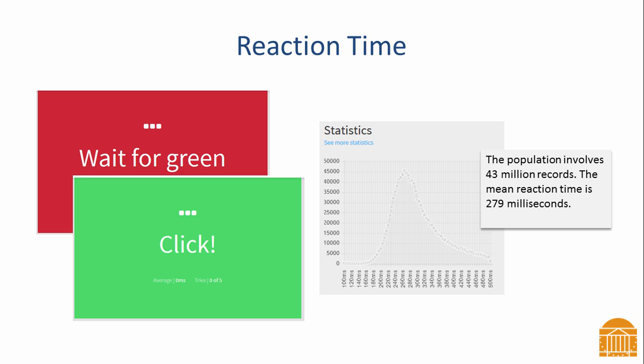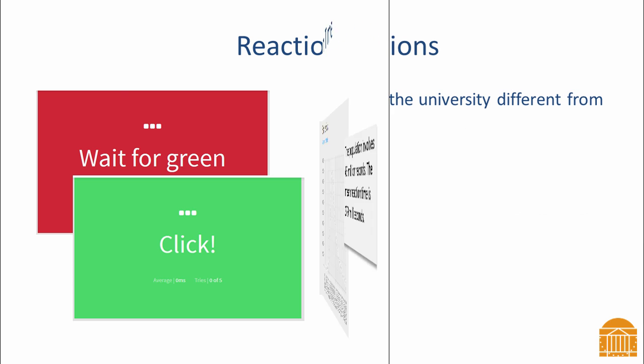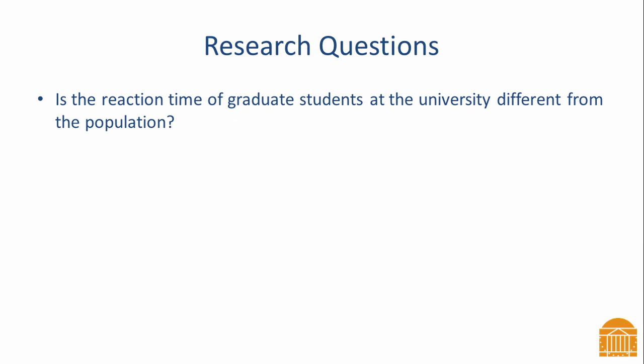According to the website, the mean reaction time is 279 milliseconds. This mean is based on a population of over 43 million people. A statistics professor wanted to know if graduate students had a different reaction time than the general population.